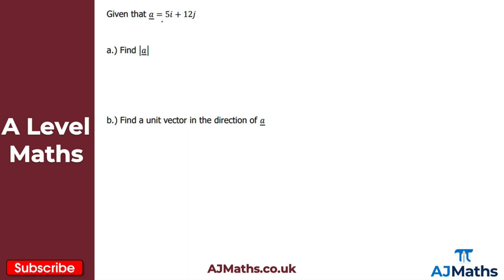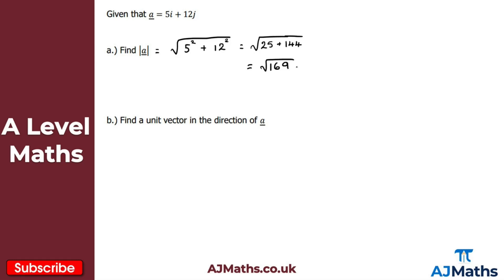The first question: the vector a equals 5i plus 12j. For part a, we want to find the magnitude of vector a. This is simply an application of Pythagoras' theorem, so we take the square root of 5 squared plus 12 squared. That's the square root of 25 plus 144, giving us the square root of 169, which equals 13. So the magnitude of vector a is 13.